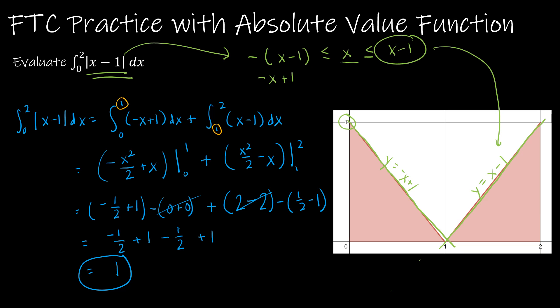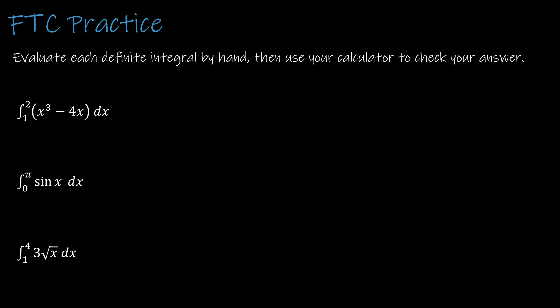We can actually check this with a geometric formula. The left triangle is one-half times base of 1 times height of 1, and the right triangle is the same. So one-half plus one-half equals 1, which matches what we got using integration. Here are three questions for you to try on your own — do these by hand, feel free to check with a calculator when done. Press play when ready to see how you did.